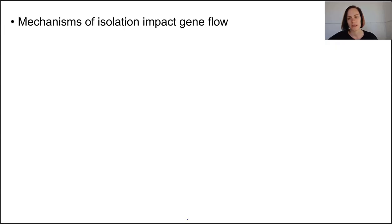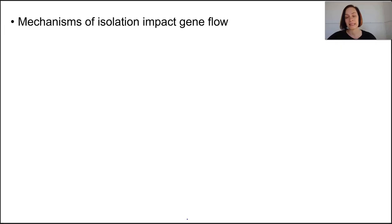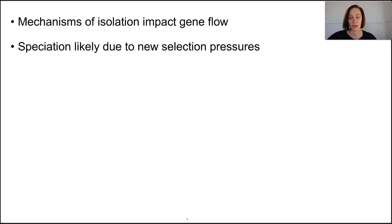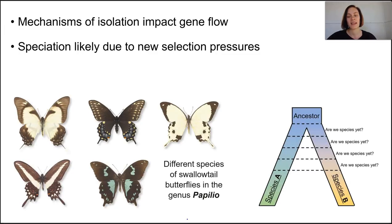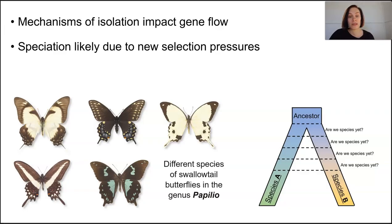All these mechanisms of isolation affect how gene flow occurs in the population. At best, the separation can interrupt gene flow for a short period of time; at worst, it can completely eliminate gene flow and isolate that section of the population. Essentially, regardless of how a population is isolated, speciation is likely to occur because new selection pressures lead to new phenotypes, leading to changes in genotype frequency — and boom, new species.